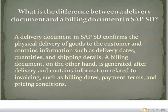What is the difference between a delivery document and a billing document in SAP S.D.? Answer: A delivery document in SAP S.D. confirms the physical delivery of goods to the customer and contains information such as delivery dates, quantities, and shipping details. A billing document, on the other hand, is generated after delivery and contains information related to invoicing such as billing dates, payment terms, and pricing conditions.